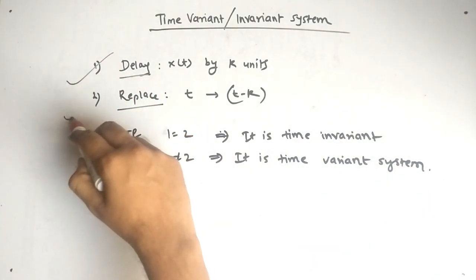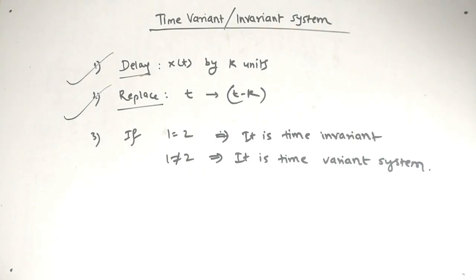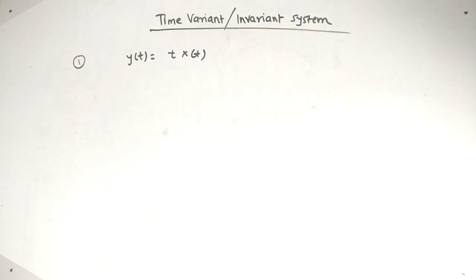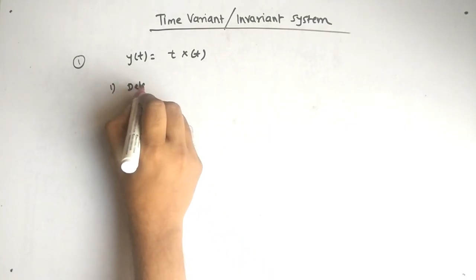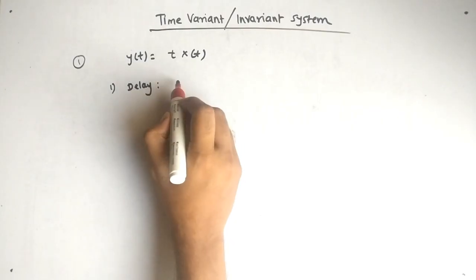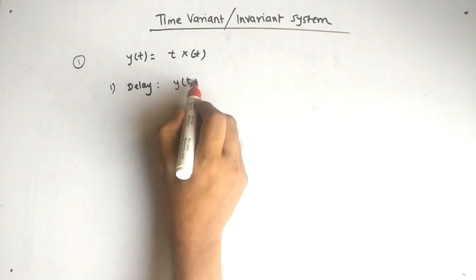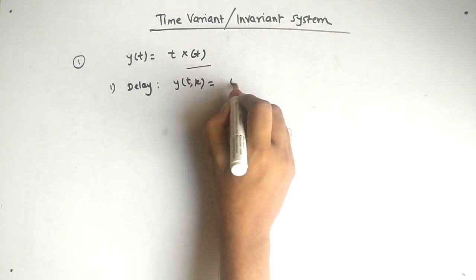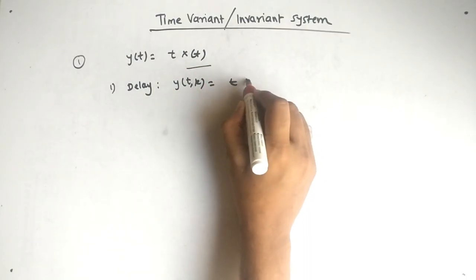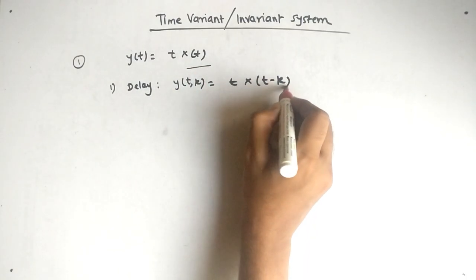You only have to follow these two steps: delay and replace. So let's see the examples. Our first example is y(t) = t · x(t). The first step is to delay. Let the delayed output be represented by y(t, k). We delay x(t), so t remains as it is and x(t) is delayed by k units to get x(t − k).